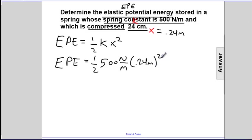When we look at this from a unit standpoint, we'll end up with newtons per meter, that's the spring constant, times the square of the compression, meters squared. We'll end up with meters canceling one of the meters and end up with newton meters, which are joules. So this is dimensionally correct.